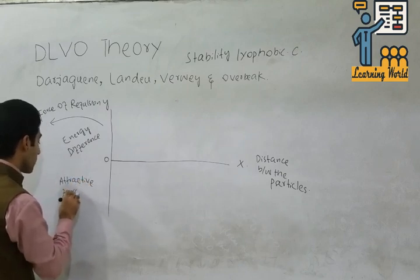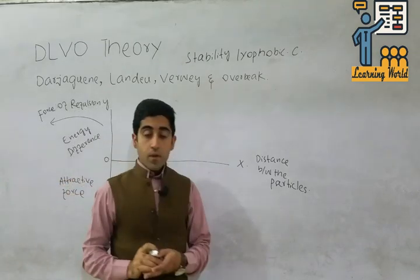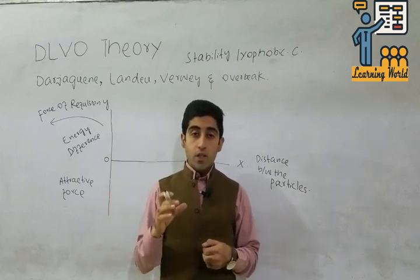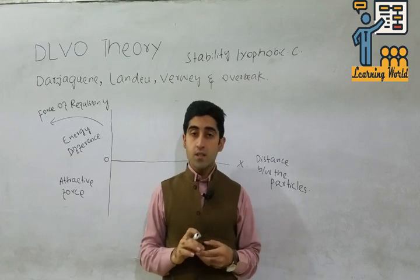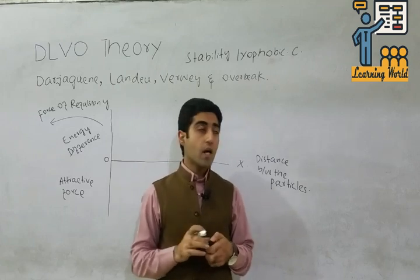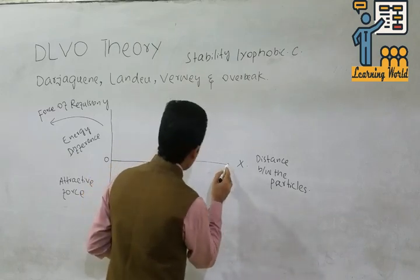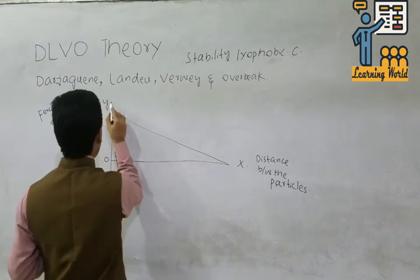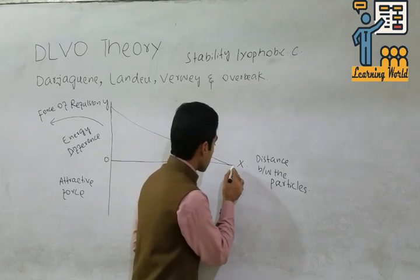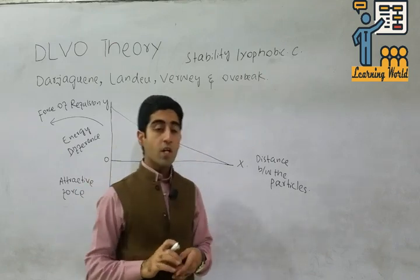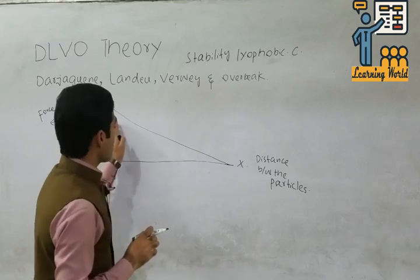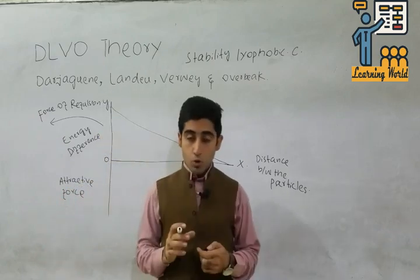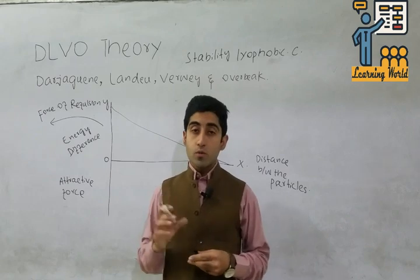If two particles having the same charges are placed, the distance between the particles increases because they have the same charges and they repulse each other. We represent this with this curve, because repulsion forces occur. If two particles have different charges, forces of attraction occur between them and we draw it below the zero point.